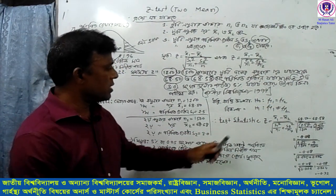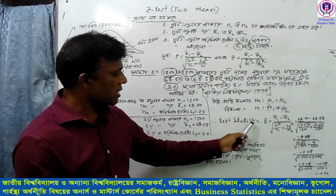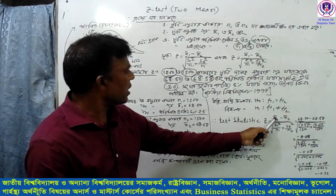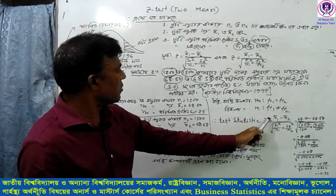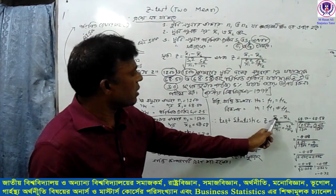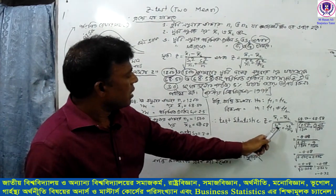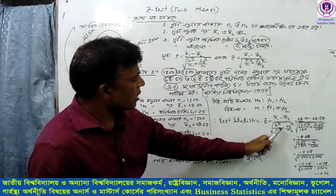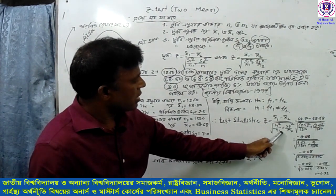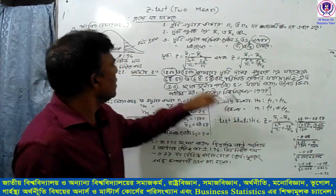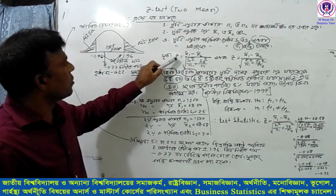Test statistics. The statistic is Z1. We have a formula: x-bar 1 minus x-bar 2, divided by s1 squared over n1 plus s2 squared over n2.